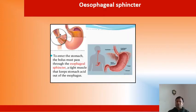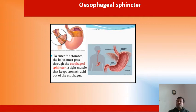The structure of the esophageal sphincter is present at the junction of the esophagus and stomach. It helps stop gastric acid from flowing back from the stomach into the esophagus or through the mouth.